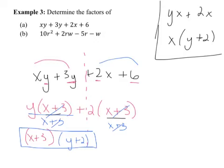One thing to note: the order of the middle terms does not matter. You could switch the 3y and the 2x, and you'd end up getting x plus 2 and y plus 3, which when written as a product gives the same result. Multiplication is commutative, so the order in which the factors are written doesn't matter. For part B, I'll try it both ways because it can be tricky.